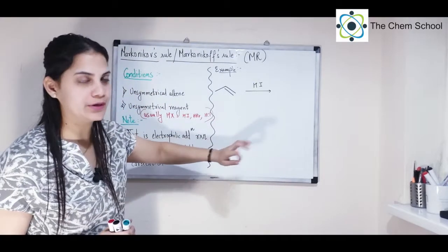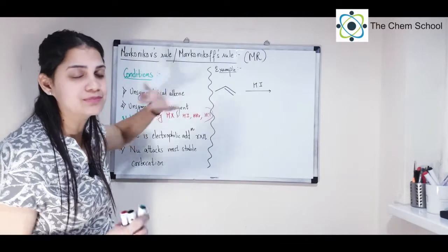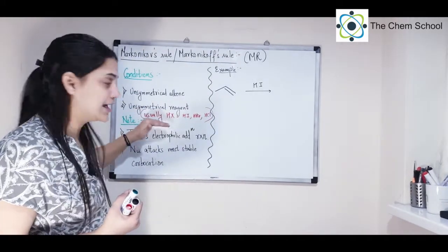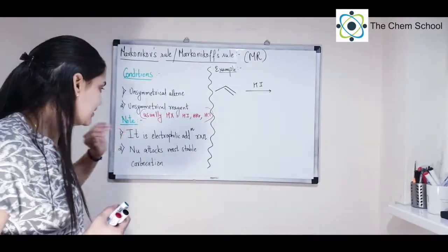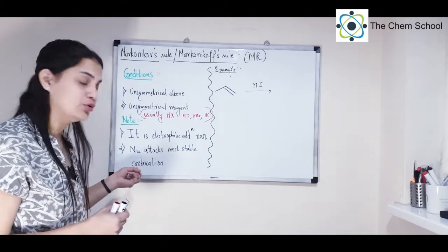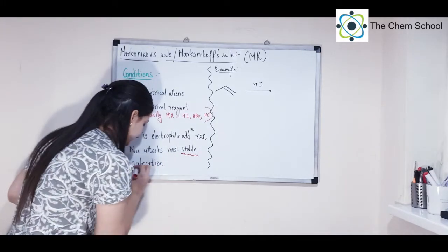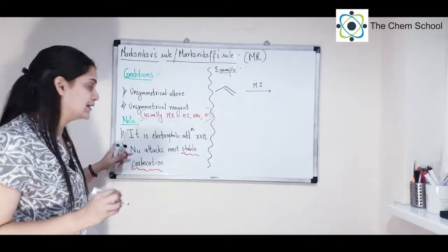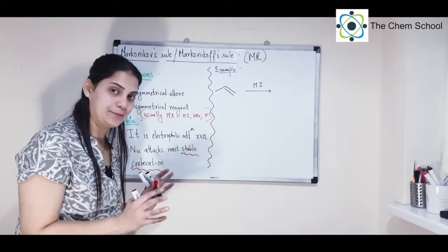Let's do a quick summary. Markovnikov's rule — also called Markovnikov's rule — requires an unsymmetrical alkene and an unsymmetrical reagent, usually halogen acids like HI, HBr, or HCl, though other reagents can also be used. It is an electrophilic addition reaction because the alkene is a nucleophile. The most important factor deciding the product formation is the stability of the carbocation. The nucleophile will always attack the most stable carbocation to give the major product.